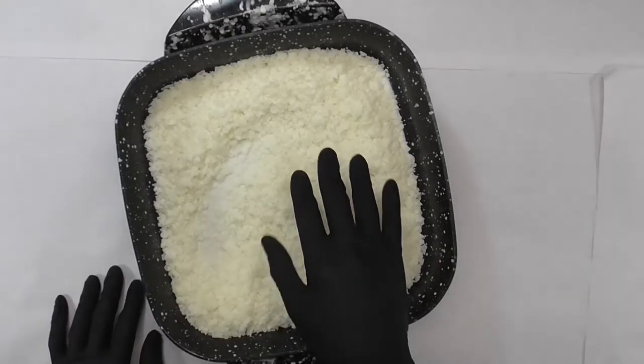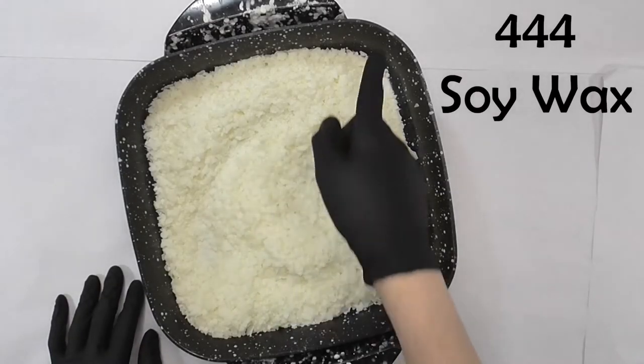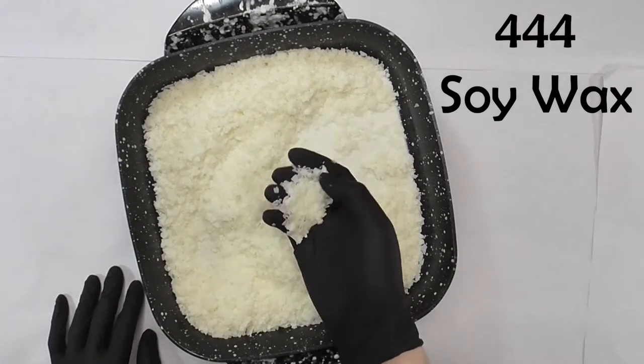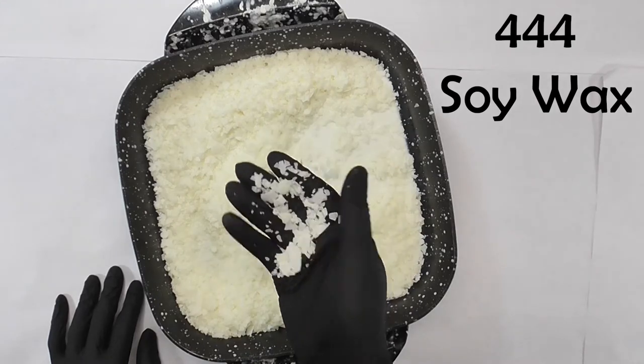The wax I use for batik is 444 soy wax, which is normally used for candles, but it works really well on fabric. I use an inexpensive electric frying pan to melt it.